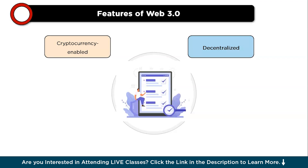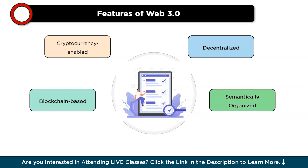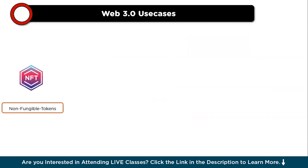The next feature is decentralization. Unlike Web 2, where power is concentrated in few centralized entities, Web 3 operates on a decentralized network of nodes, ensuring no single entity controls the entire network and promoting transparency, resilience, and censorship resistance. Third is blockchain-based technology — a distributed ledger providing a tamper-resistant and transparent mechanism for storing transactional data, with each transaction cryptographically linked in chronological order ensuring immutability. Finally, Web 3 is semantically organized, structuring data using linked data and ontologies to enhance interoperability and discoverability across the decentralized web.